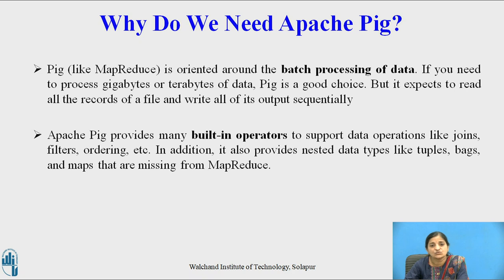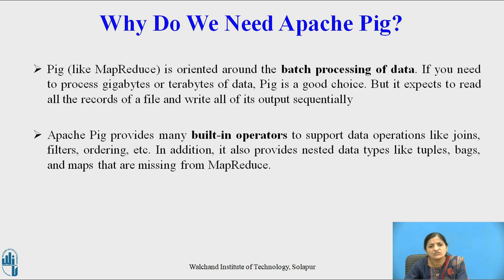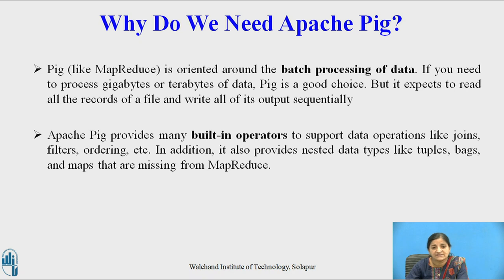Pig expects to read all the records of a file and write all of its output sequentially. Apache Pig provides many built-in operators to support data operations like joins, filters, and ordering. In addition to these traditional operations, it also provides nested data types like tuples, bags, and maps that are missing from normal MapReduce in Java.